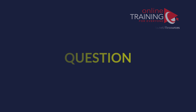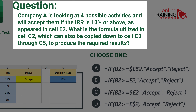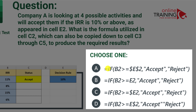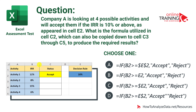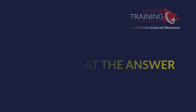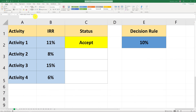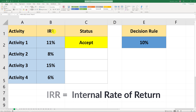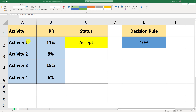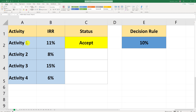Let's look at a tricky Excel assessment question we frequently see on tests. Company A is looking at four possible activities and will accept them if the IRR is 10% or above, as shown in cell E2. What is the formula in cell C2, which can also be copied to cells C3 through C5 to produce the required results? All four choices use the IF formula. IRR is the internal rate of return — you calculate the return on investment for that activity — but we don't need to calculate IRR here; it's important to understand the context.